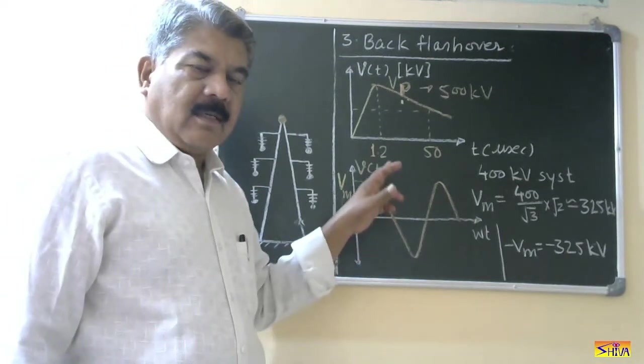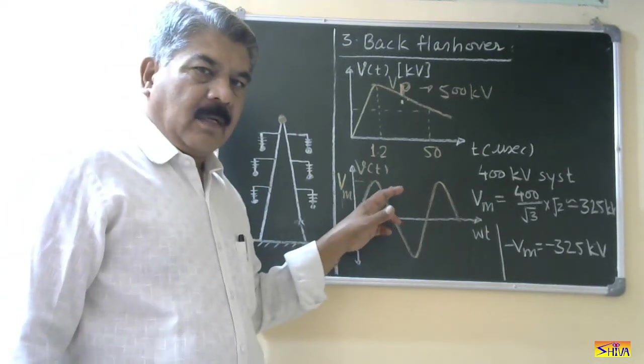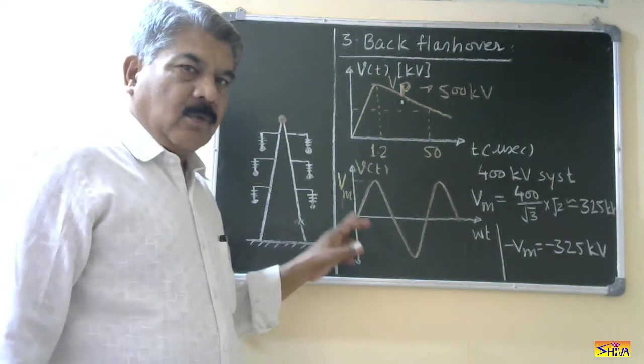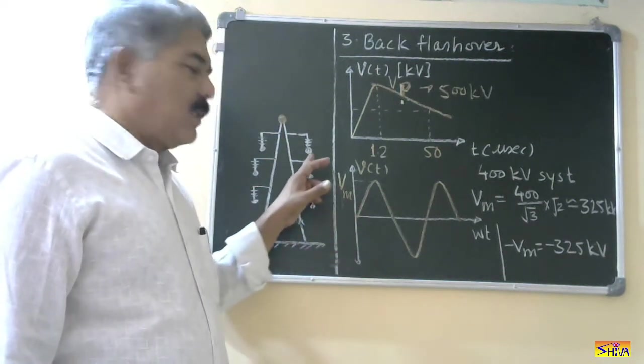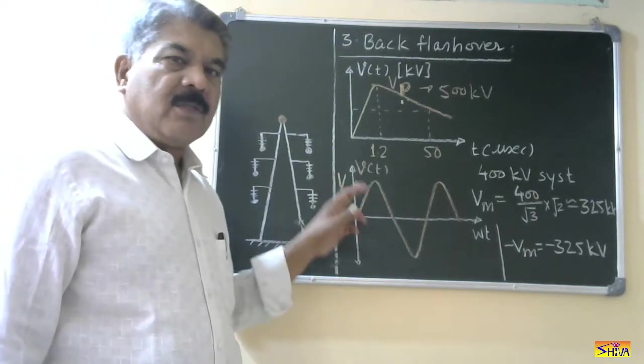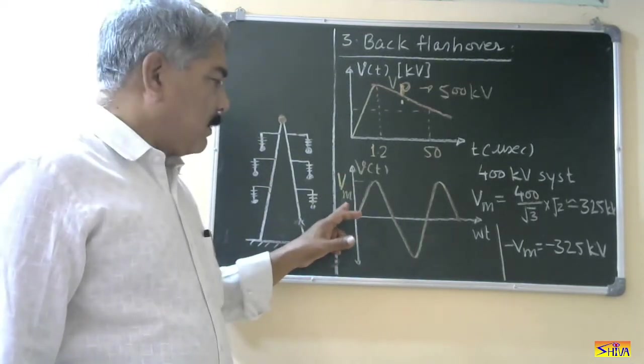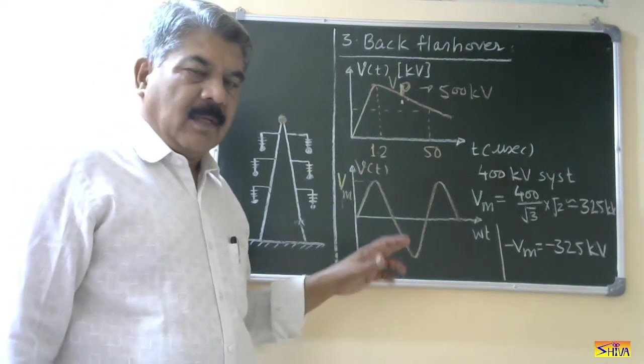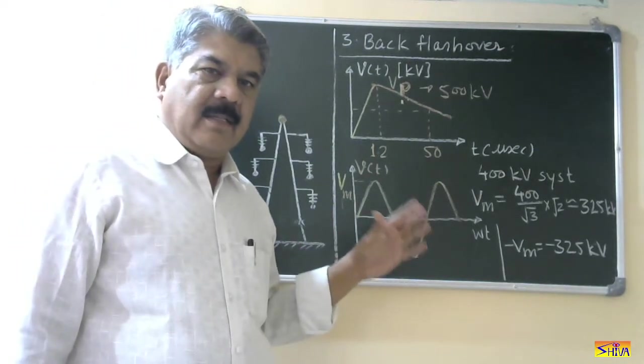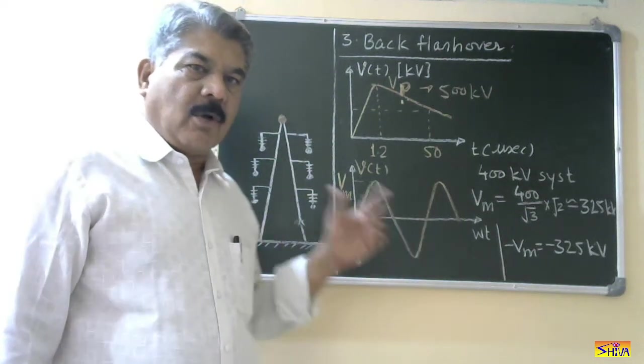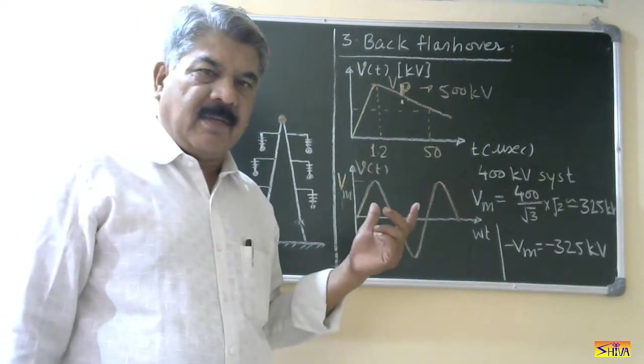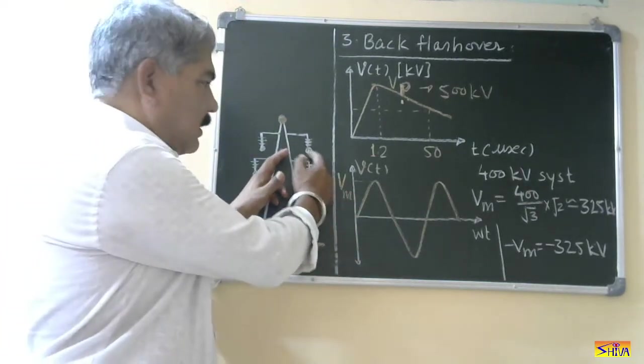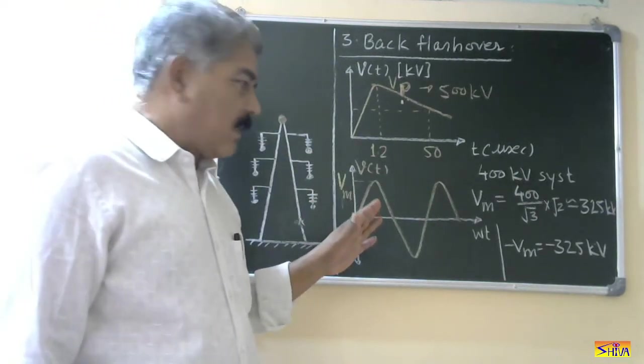Now suppose this lightning overvoltage comes at this zero crossing instant. So at this zero crossing instant, this power conductor has value of 0 volt. So relative difference will be 0 and 500 minus 0 that is 500 kV. As it is 400 kV line, there will be no flashover because relative distance is only 500 kV and it is designed to sustain this voltage. This distance is sufficient. It will not flashover at 500 kV.